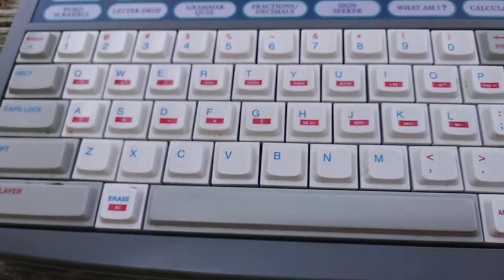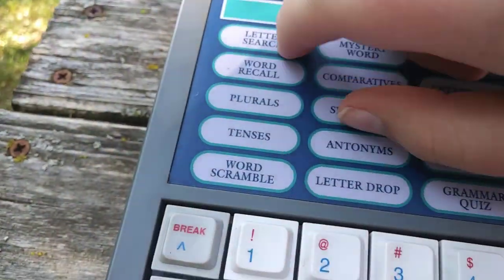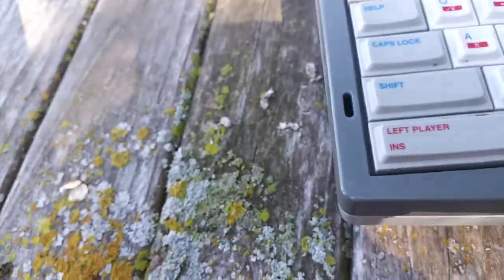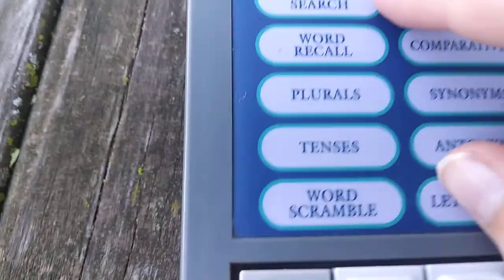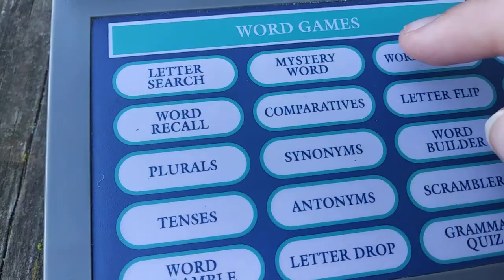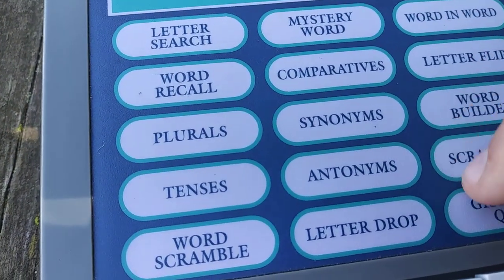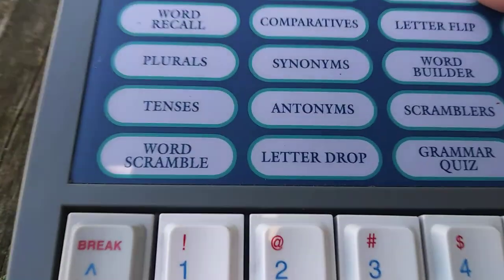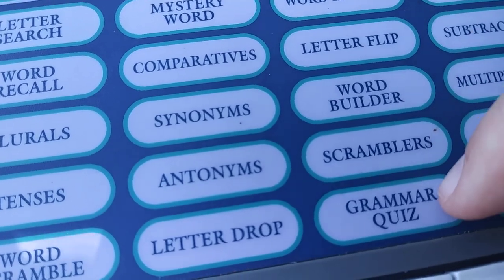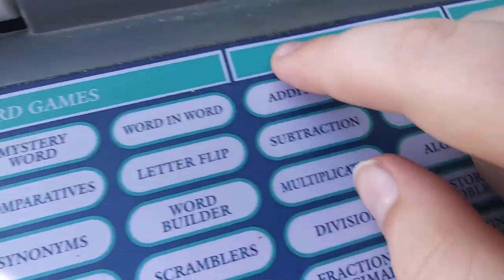Keyboard, standard. Right here we have all the activities and stuff. So yes, I will show you those. Right here we have letter search, word recall, plurals, tenses, word scramble, mystery word, comparatives, synonyms, antonyms, letter drop, word in word, word builder, letter flip, word builder, scrambles, grammar quiz — for word games. For math, mathematics.